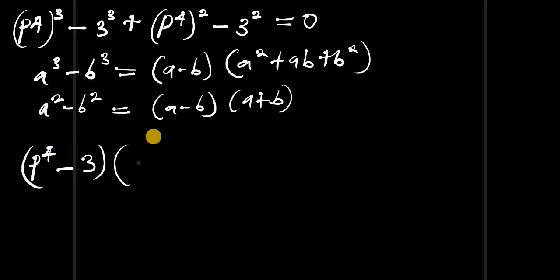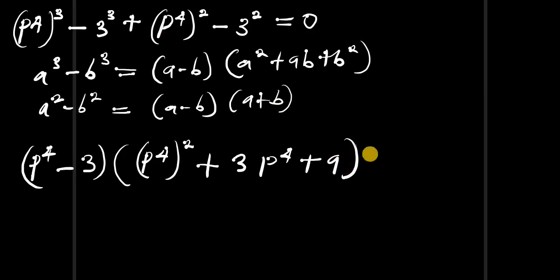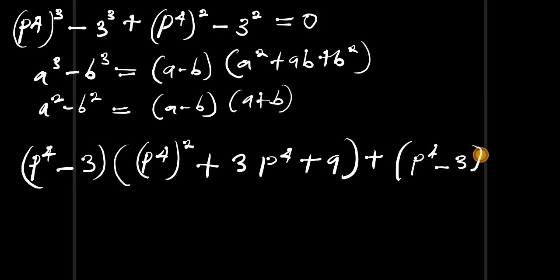Here a is p to the power of 4 and b is 3. So we get (p⁴ minus 3) times [(p⁴)² plus 3·p⁴ plus 3² which is 9], plus the second part expressed as (p⁴ minus 3)(p⁴ plus 3), and this equals zero.